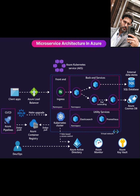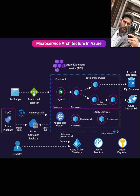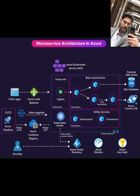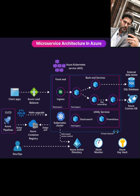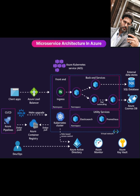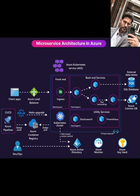Azure offers excellent options for data storage, like Azure SQL Database for relational data or Azure Cosmos DB for highly scalable NoSQL databases. Where do your microservice container images live before deployment? In Azure Container Registry — this is where you store your private Docker images securely. AKS can easily pull these images using its managed identity.